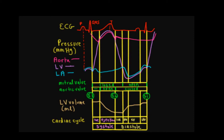When you look at the Wigger's diagram again, it's good to review the valvular events. Here we're looking at the left side, but the principles apply to the right as well. The onset of ventricular contraction causes the mitral or tricuspid valve to close. Pressure rises during IVC until we open the semilunar valve. We then have the ejection phase, followed by IVR and filling.